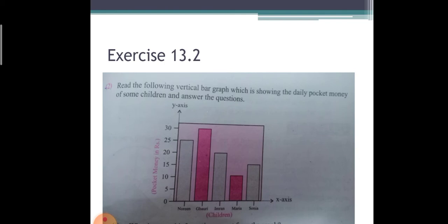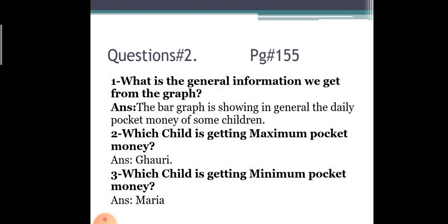Noreen got 25 rupees, Gauri got 30 rupees, Imran got 20 rupees, Maria got 10 rupees, and Sonia got almost 15 rupees. Okay, now we have some questions. First question is: what is the general information we get from the graph?